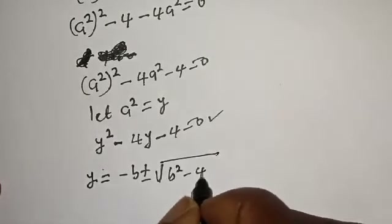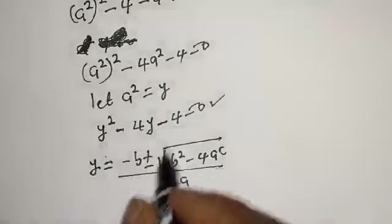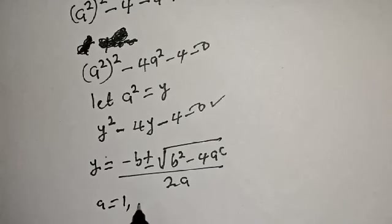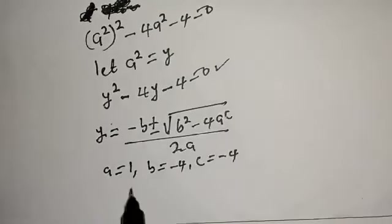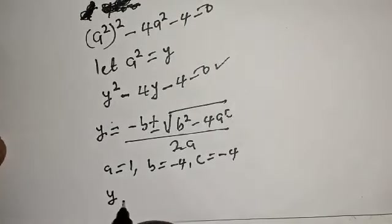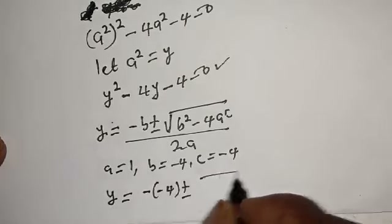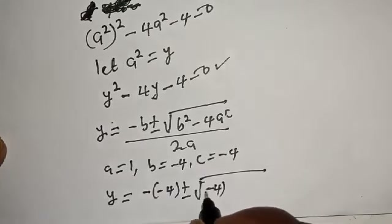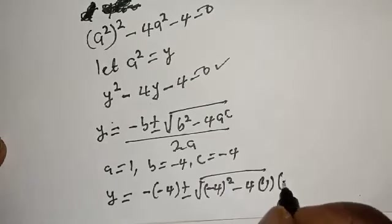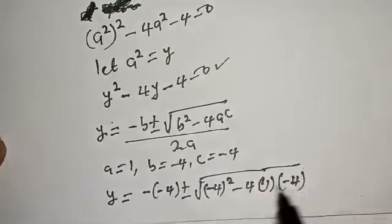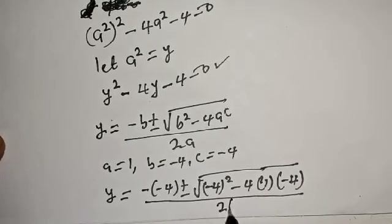The quadratic general formula gives y is equal to minus b plus or minus square root of b squared minus 4ac, all over 2a. From here, a is equal to 1, b is equal to minus 4, and c is equal to minus 4. Then y is equal to minus bracket minus 4, plus or minus square root of minus 4 squared minus 4 multiplied by 1 multiplied by minus 4, over 2 multiplied by 1.